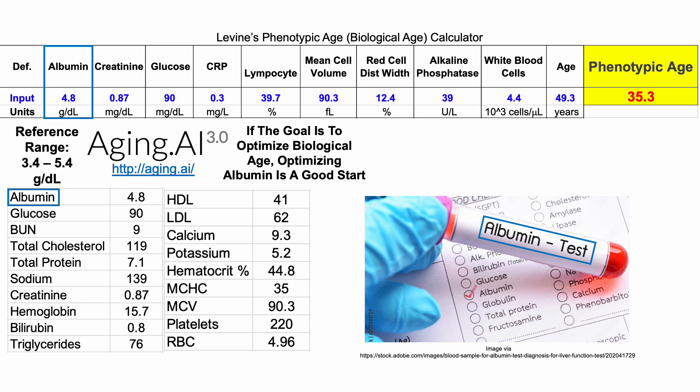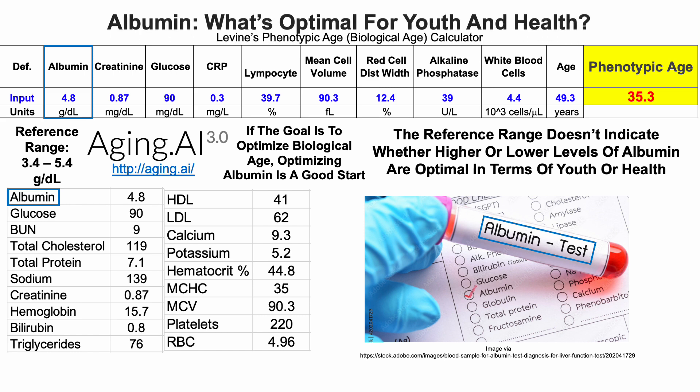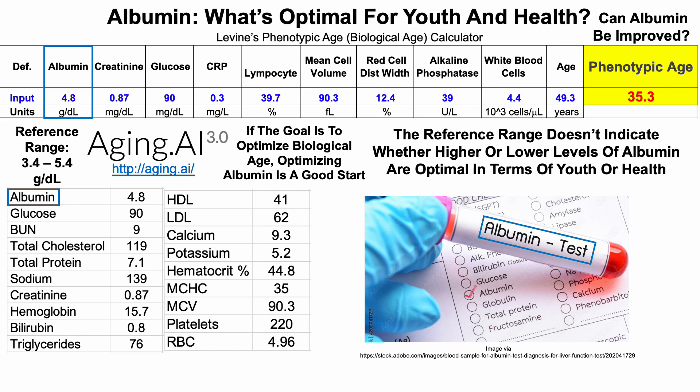The reference range for albumin is 3.4 to 5.4 grams per deciliter, or 34 to 54 grams per liter. But the reference range doesn't indicate whether higher or lower levels of albumin are optimal in terms of youth or health. So that'll be the focus of this video, and also: can albumin be improved?